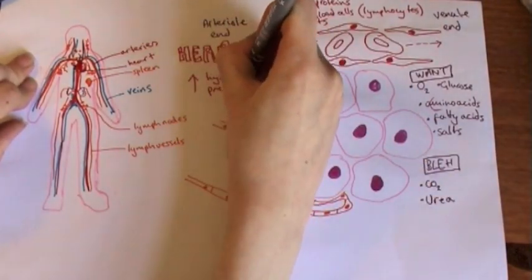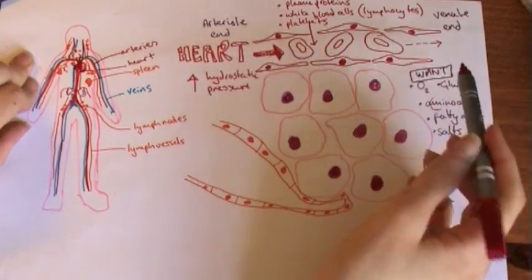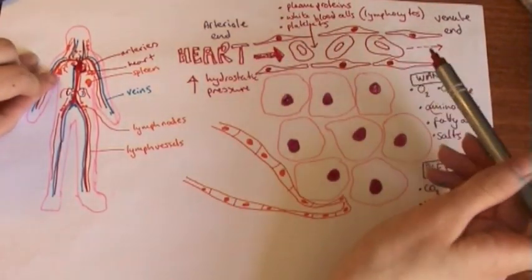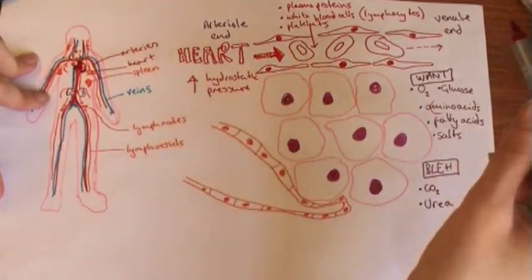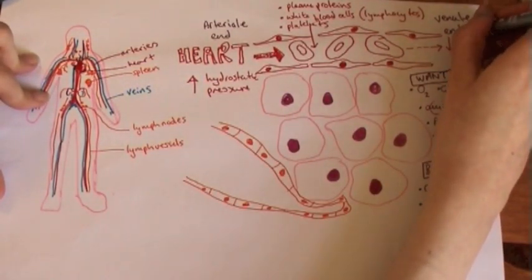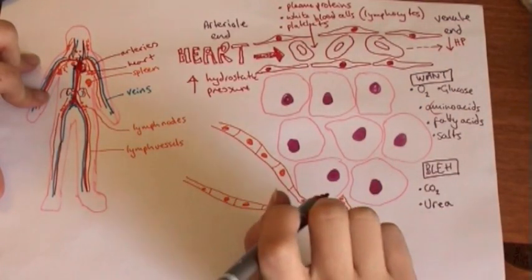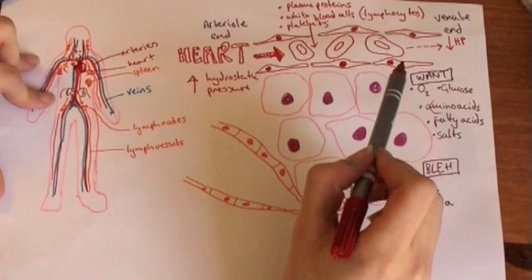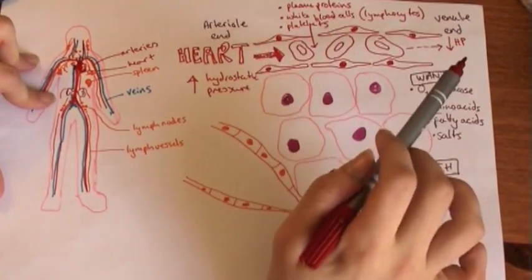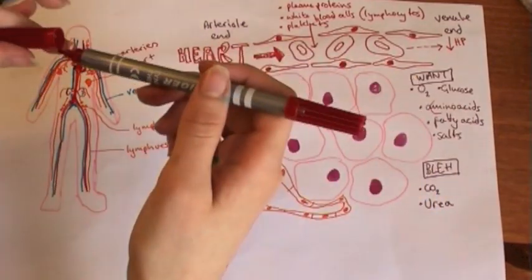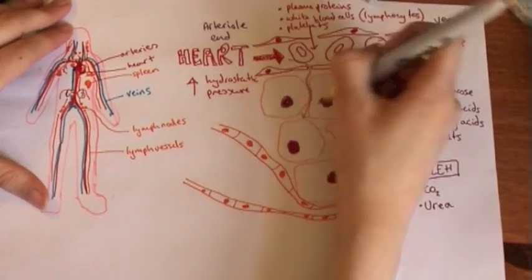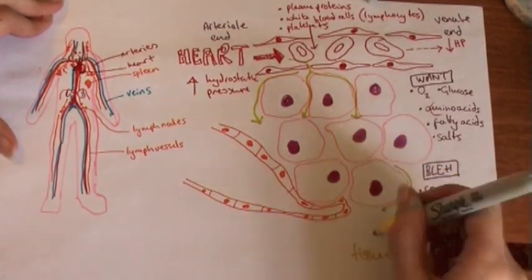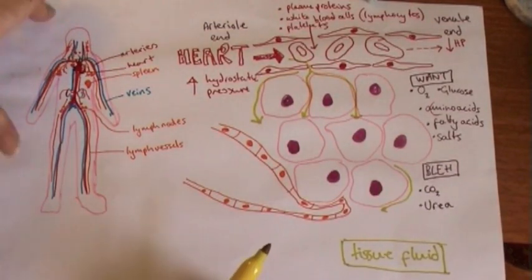Because this has come from the heart, it's at high hydrostatic pressure at the arterial end. At the venule end — after the blood has gone from arteries down to arterioles, down to capillaries — it loses the pressure it got from the heart. So at the venule end it's got low hydrostatic pressure (HP). We're going from artery to vein via arterioles and venules and through the capillaries. At the arterial end we've got really high hydrostatic pressure, and at the venule end we've got low hydrostatic pressure. Because of the high pressure, fluid is going to tend to be pushed out — forming tissue fluid.